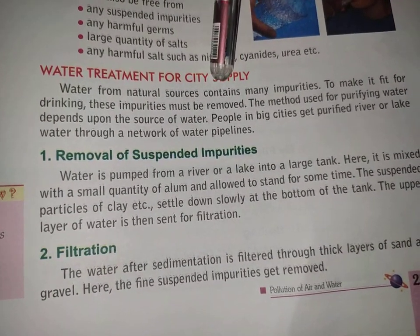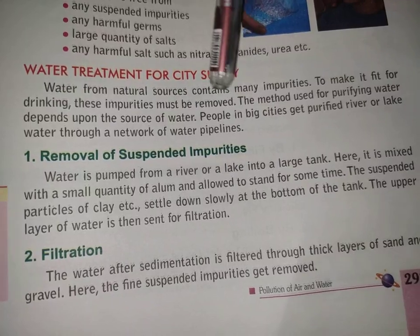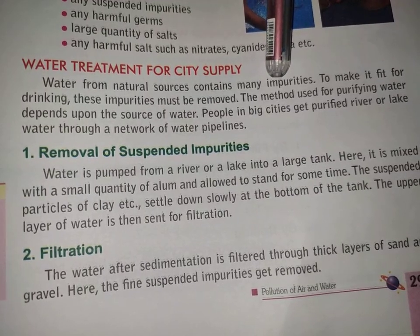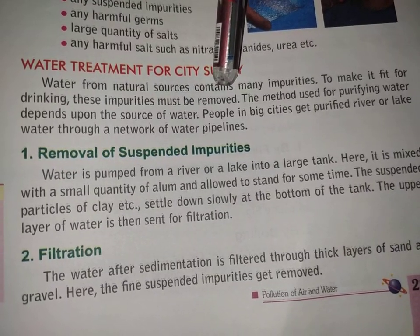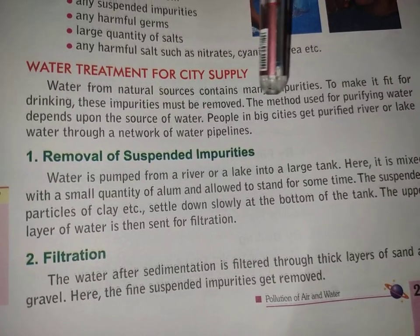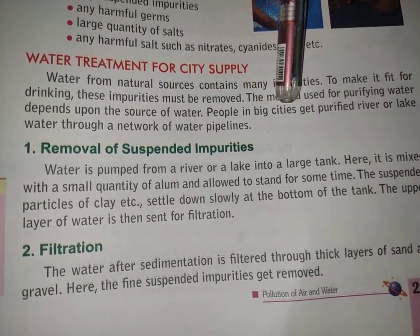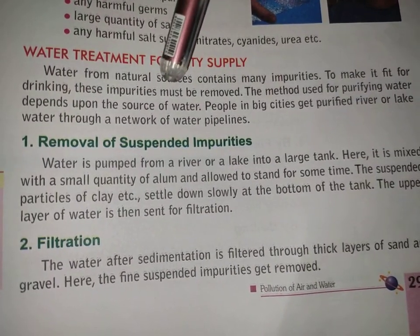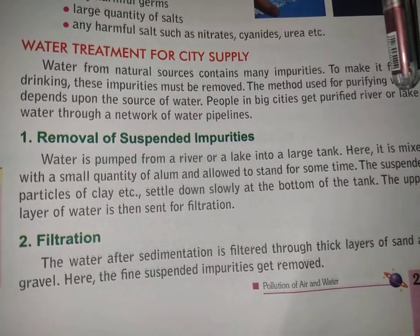Water from natural resources contains many impurities. To make it fit for drinking, these impurities must be removed. People in big cities get purified river or lake water through a network of water pipelines. Where does city drinking water come from? From a lake or river.